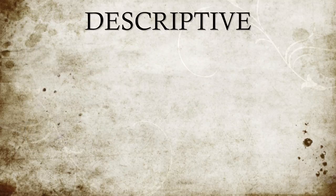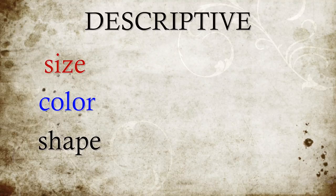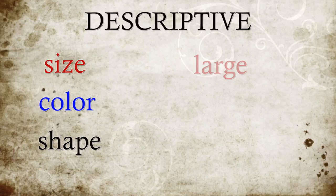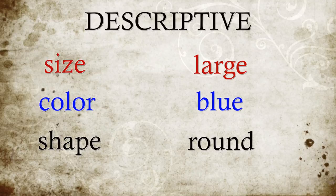Let's start with descriptive adjectives. These give you the size, color, and shape of a noun. Some examples might be 'large' as a size, 'blue' as a color, or 'round' as a shape.